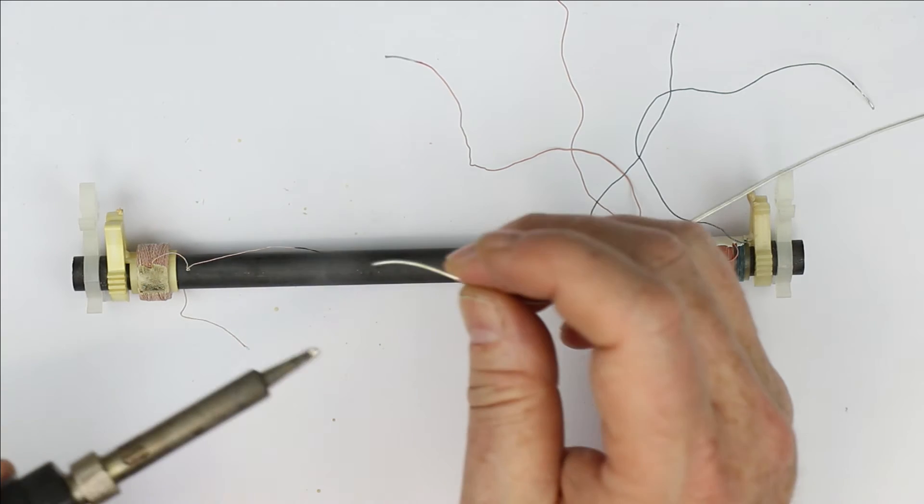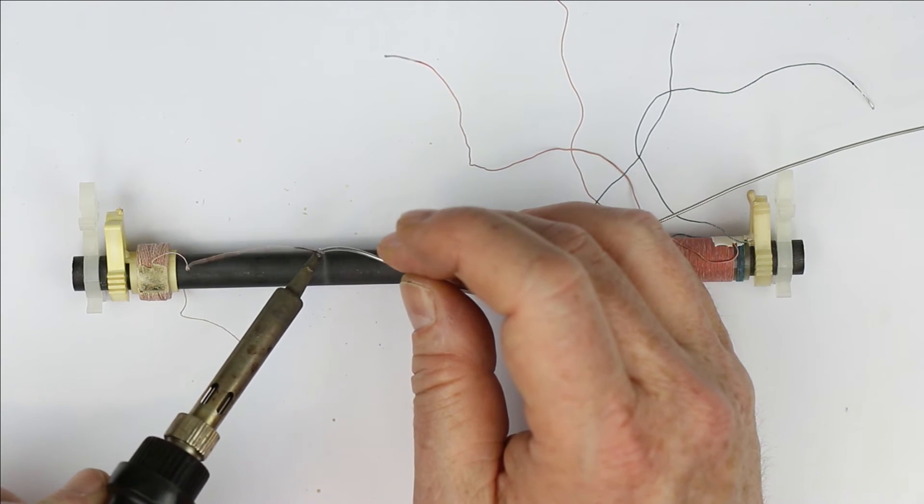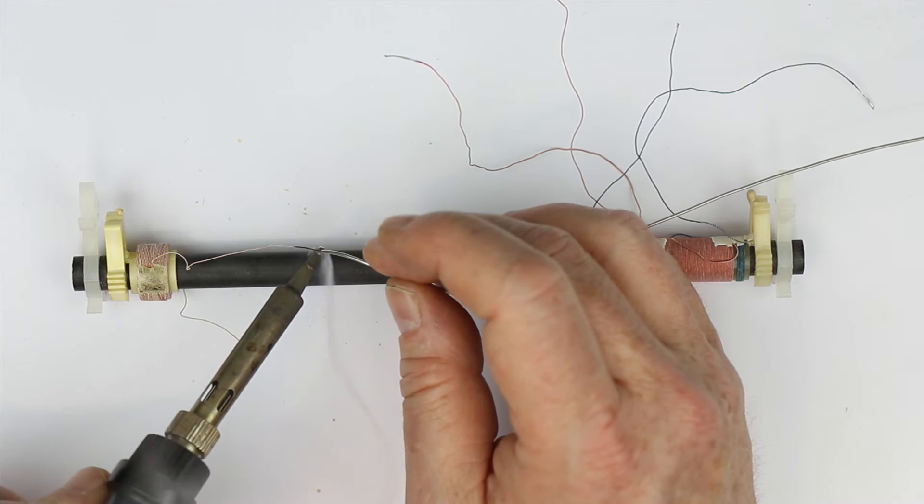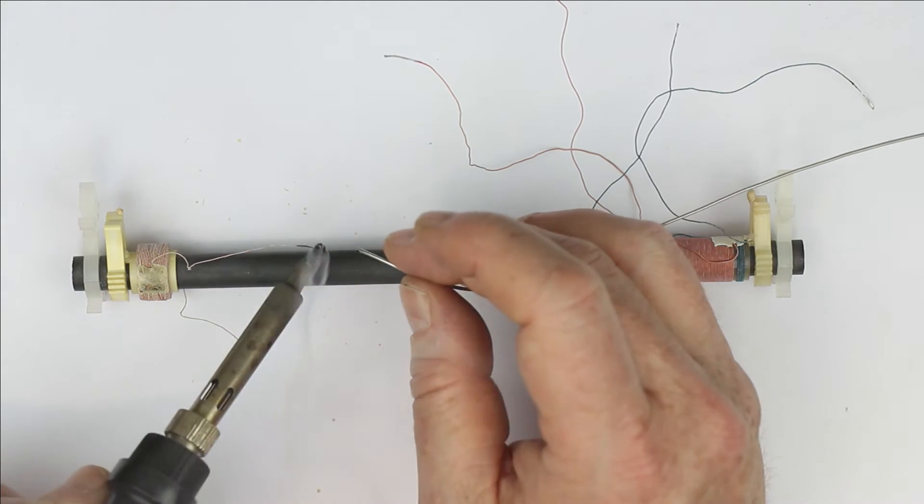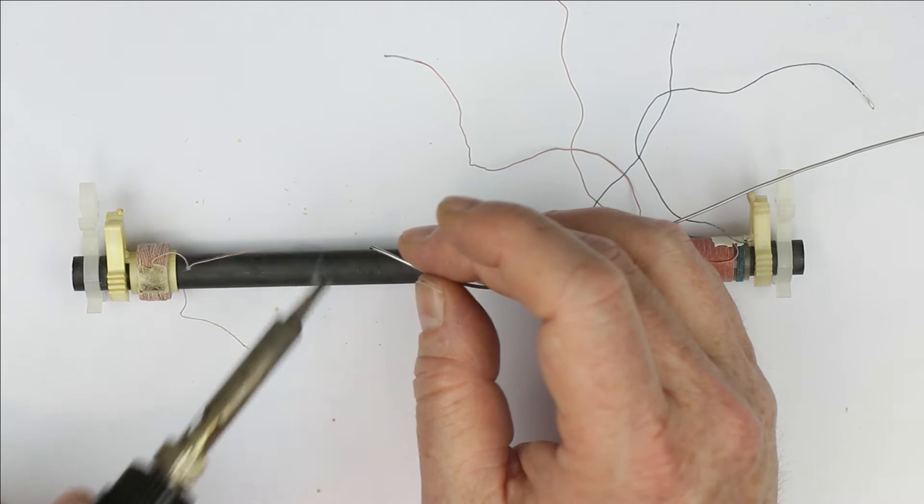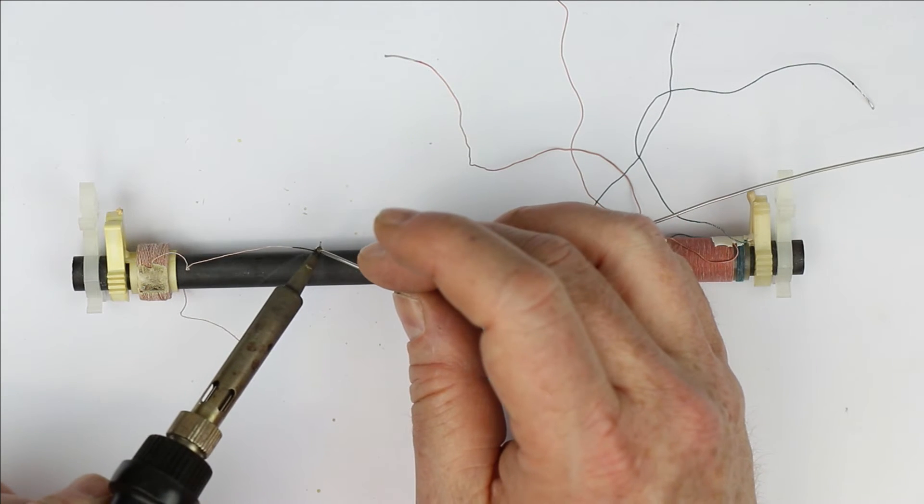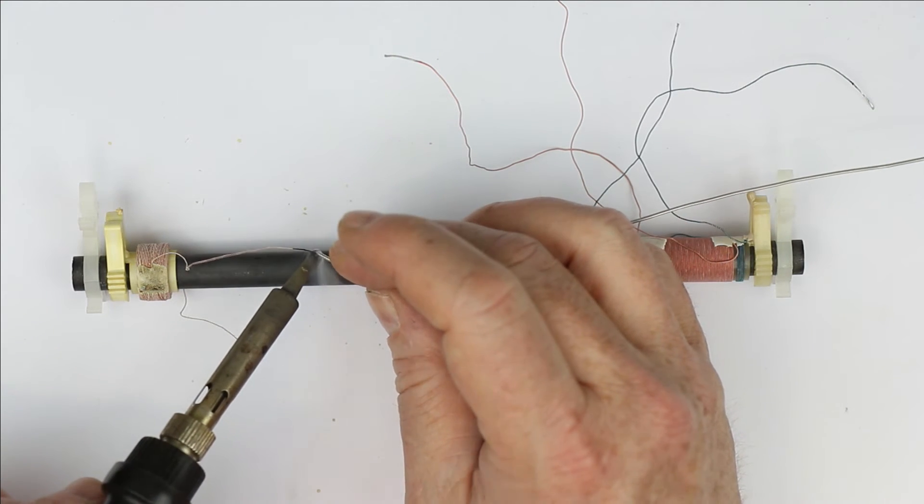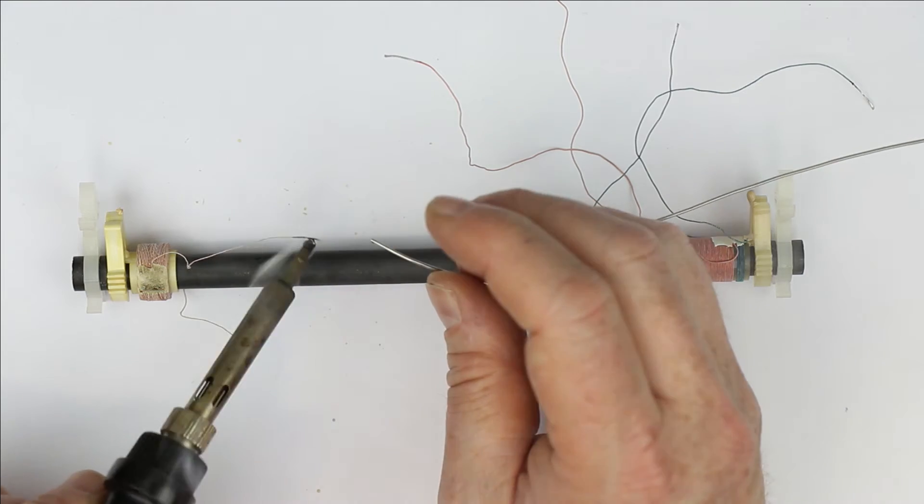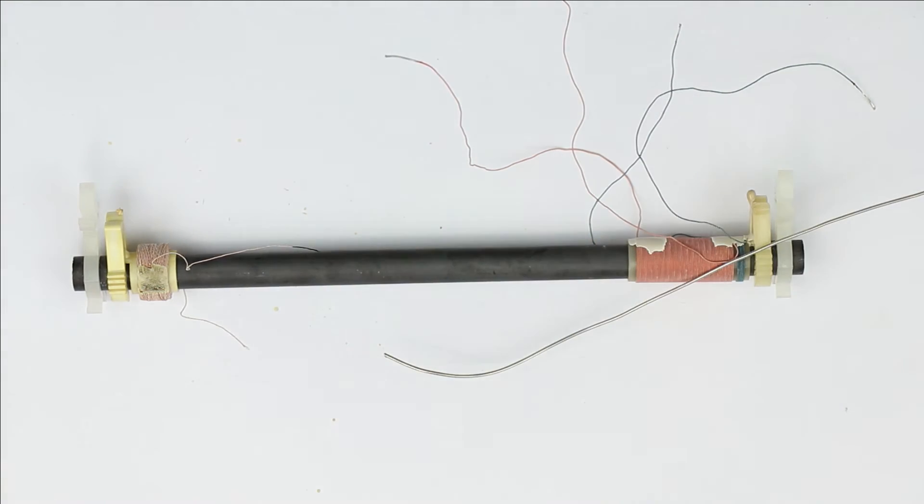And you should repeat this with always with fresh solder. It must be fresh because of the flux inside until you're really sure that you have tinned all the single strands of the litz wire, at least for, I would say, one centimeter long. So, that's one way.